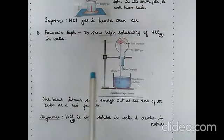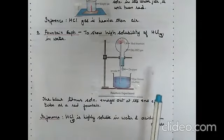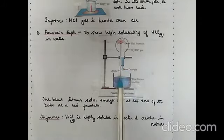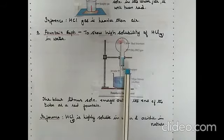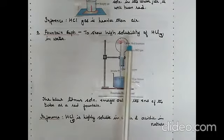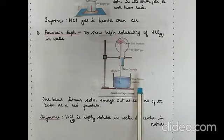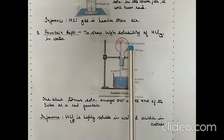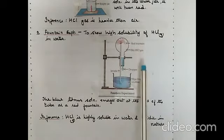The fountain experiment proves that HCl is highly soluble in water. A dry round-bottom flask filled with HCl gas has a rubber stopper with two holes: one holds a dropper filled with water and the other a jet tube. When the dropper is squeezed, water enters the flask, dissolves the HCl gas, and creates a partial vacuum. The higher outside pressure pushes blue litmus solution from a trough through the jet tube, forming a red fountain inside the flask, showing HCl is highly soluble in water and acidic in nature.